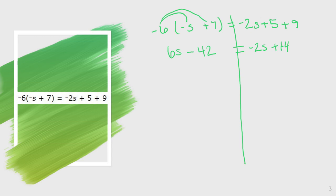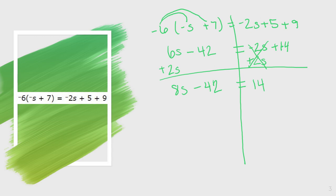Now I have simplified as far as I can by working on the left side and on the right side. So now I need to combine my variables together and my non-variables together. On this side I have minus 2s, so the opposite is to add 2s to cancel them out. That cancels out, and 6s plus 2s equals 8s. I bring down my negative 42, and on the right side all I have left is positive 14.